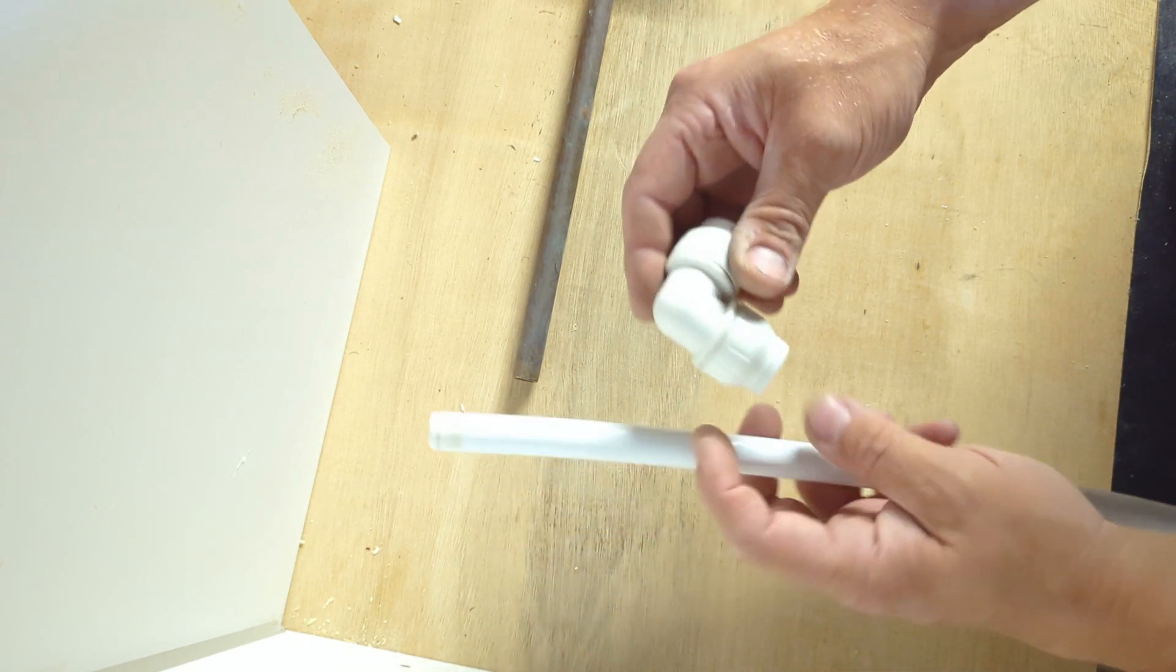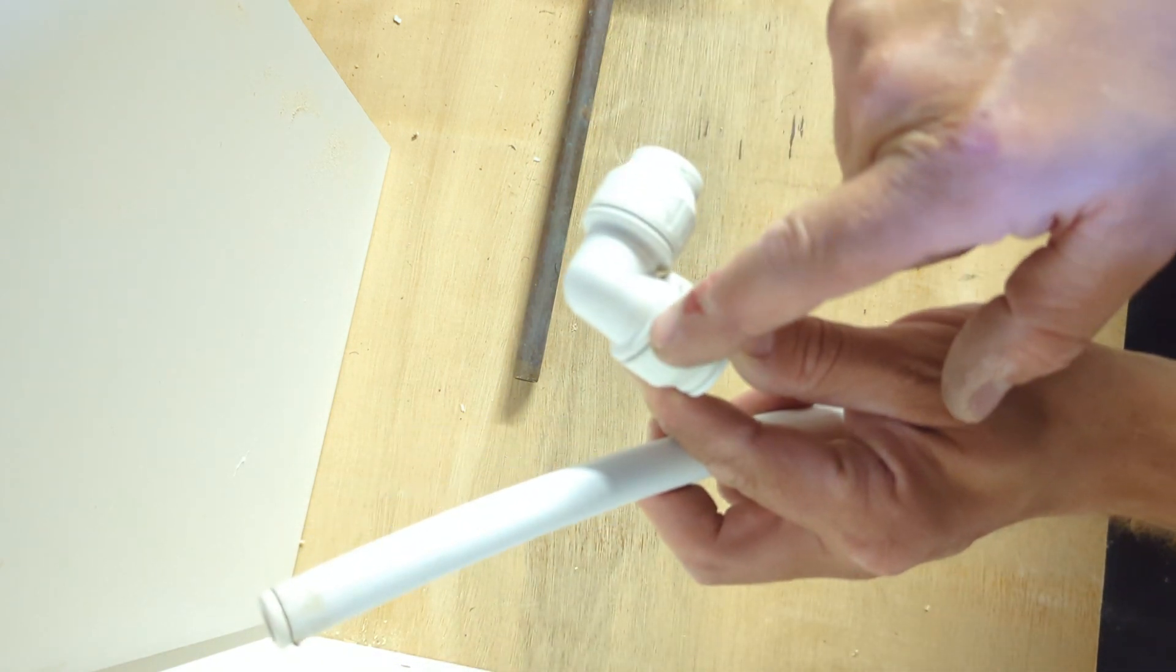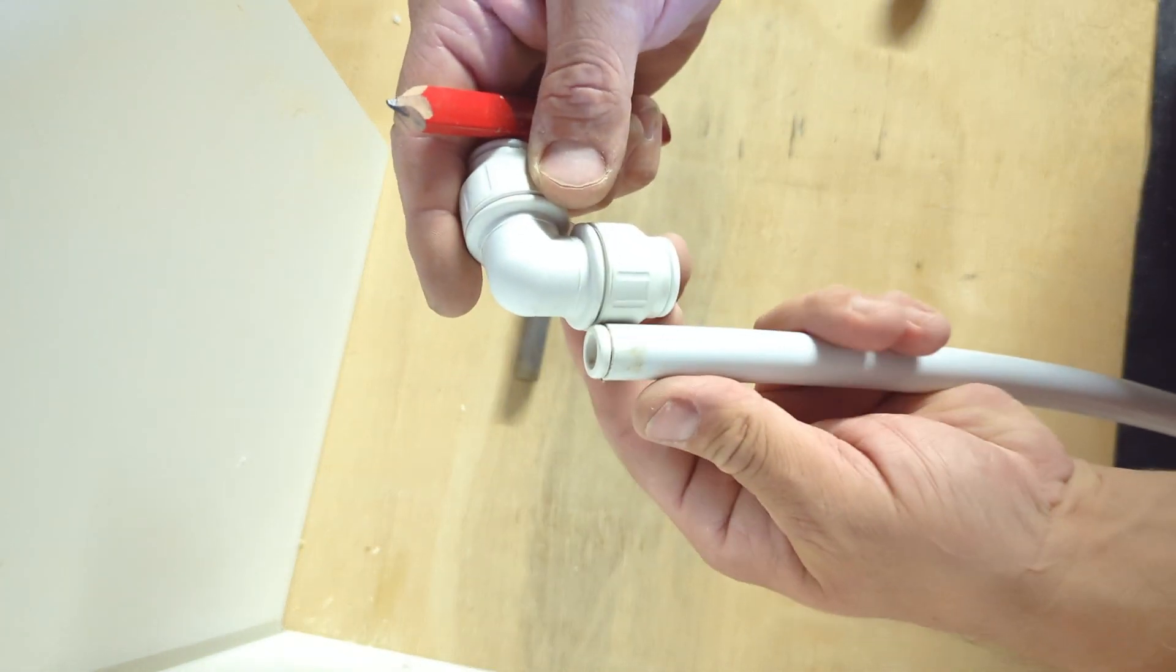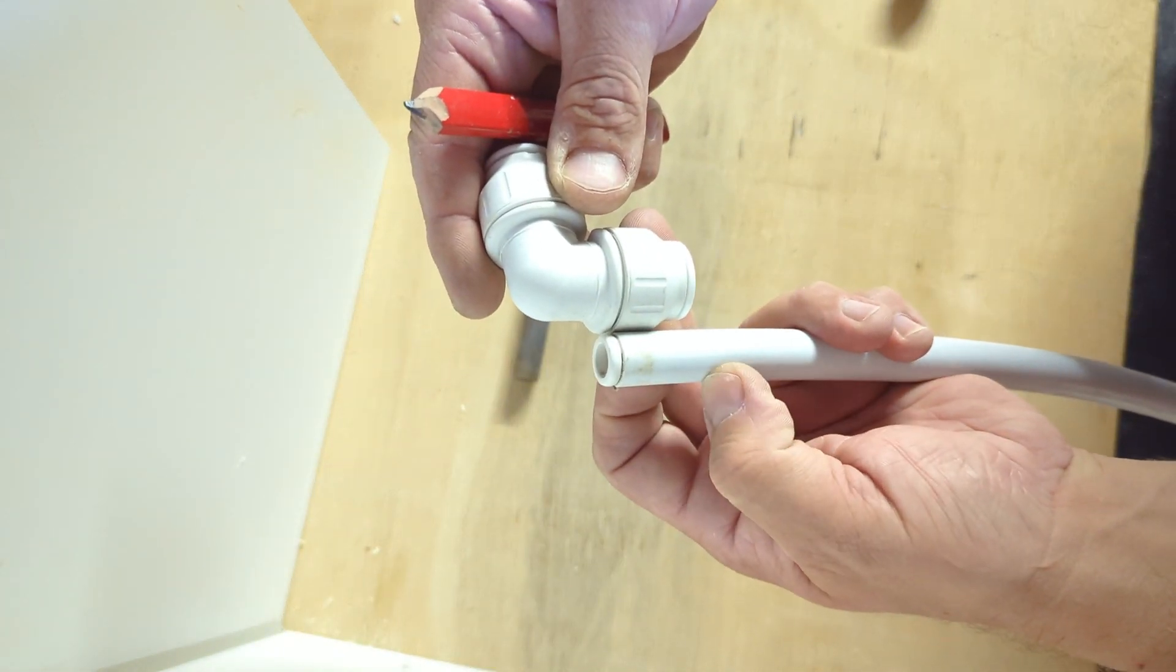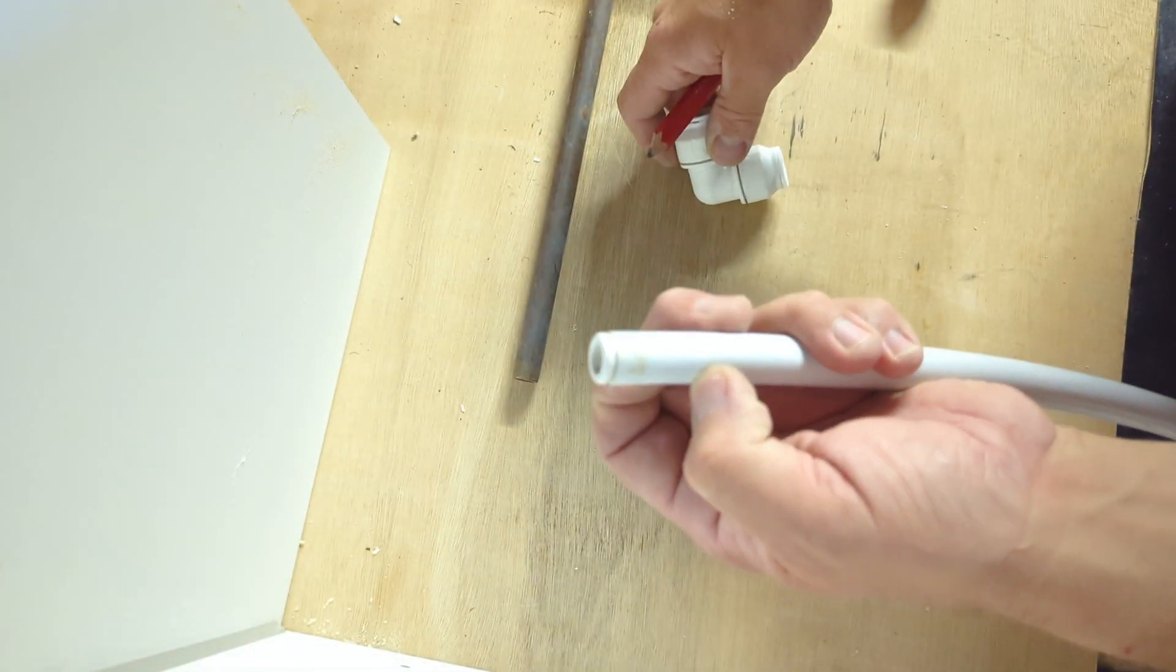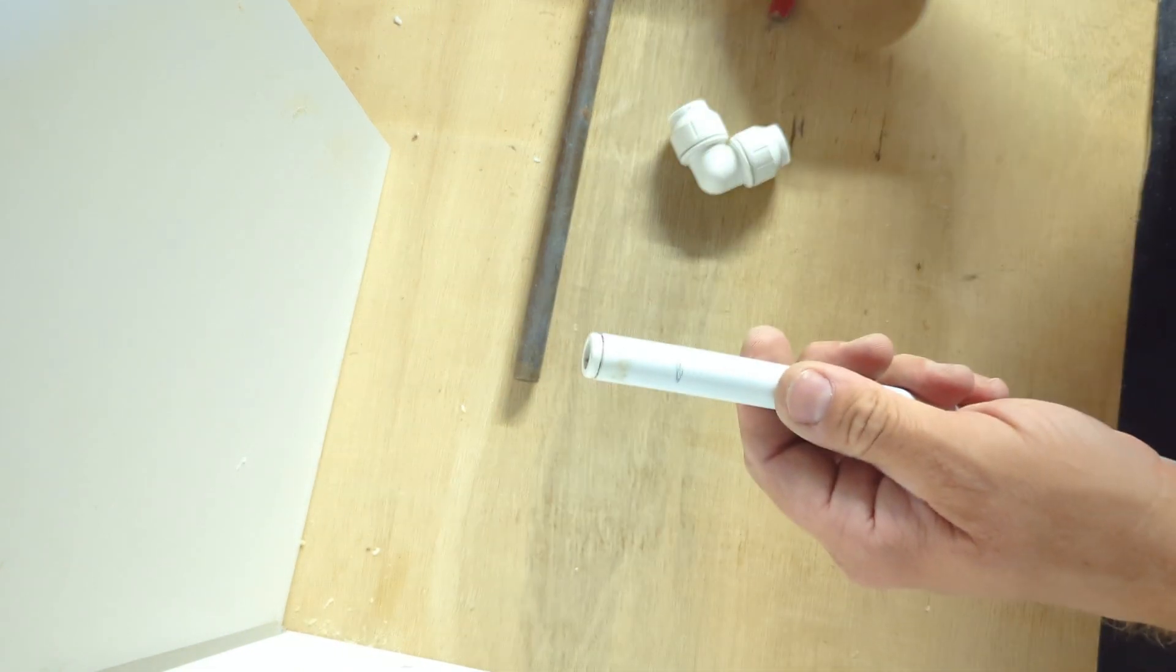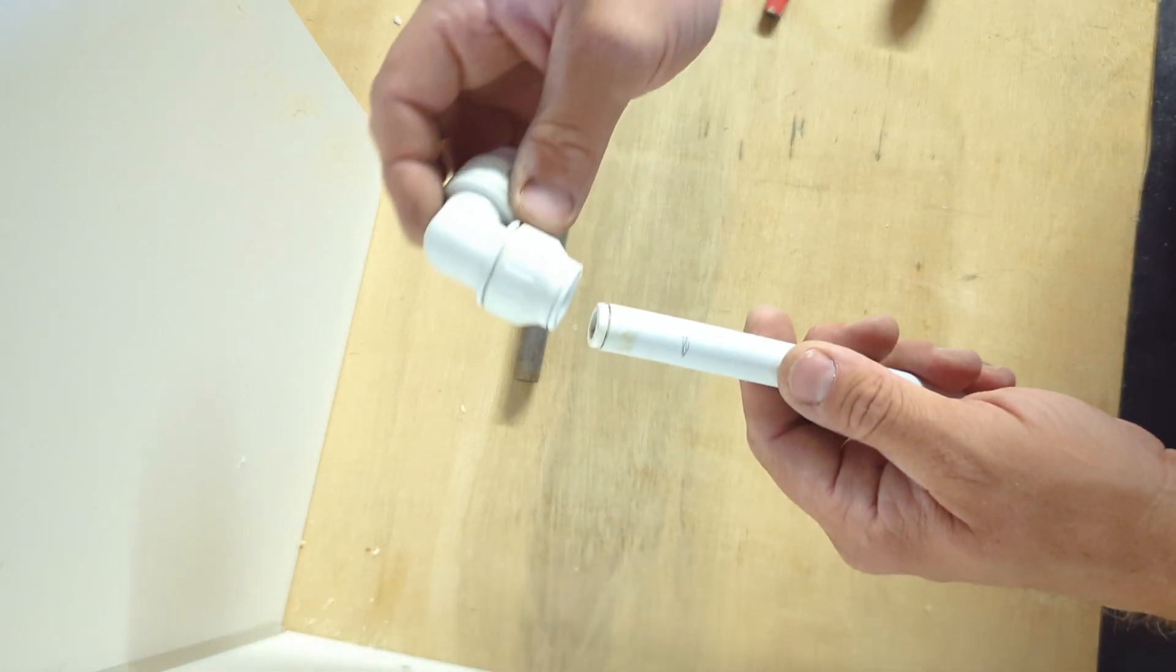Speedfit fittings will have some kind of indicator. I don't know if you can see that there—it's a line to show how far the pipe should be inserted. Now it's good practice to mark on the pipe like this to show if your pipe is fully inserted into the fitting.